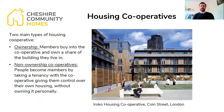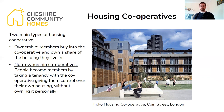Looking at the different types of community-led housing — starting with housing cooperatives, there are two main types. The ownership or mutual cooperative is where members buy into the cooperative itself and own a share of the actual building they live in. Then there's the non-ownership or non-mutual cooperative, where people become members by taking up a tenancy with the cooperative, giving them control over their housing without personally owning it — the cooperative owns the asset. An example is the Iroco Housing Cooperative in Coyne Street, London.